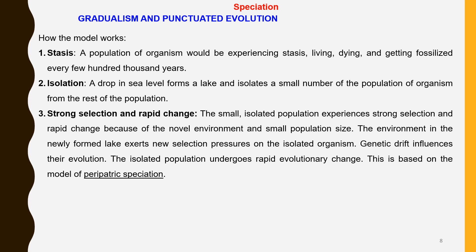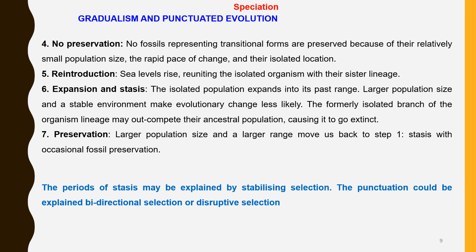This is based on the peripatric model of speciation. As only a small population had undergone a rapid change, no fossils representing transitional forms are preserved because of their relatively small size and rapid change in an isolated location.